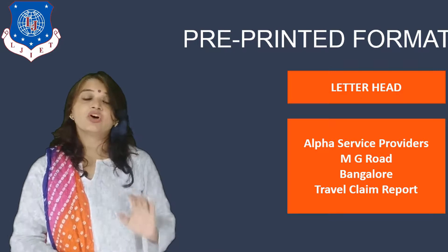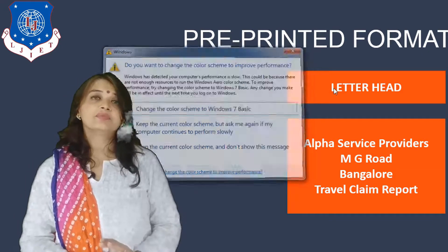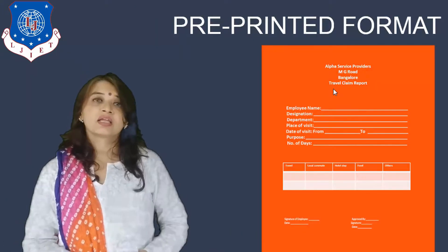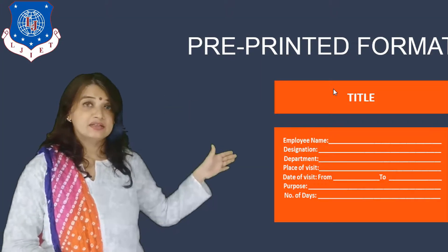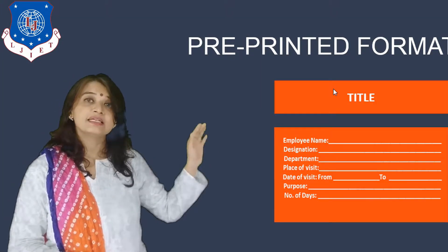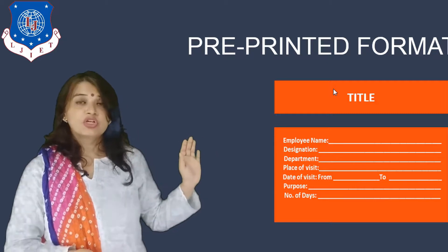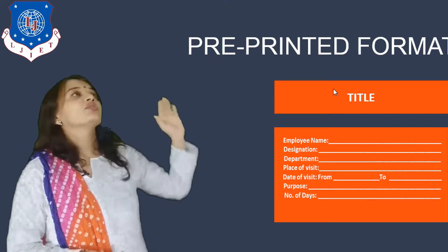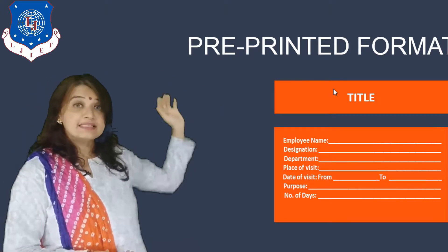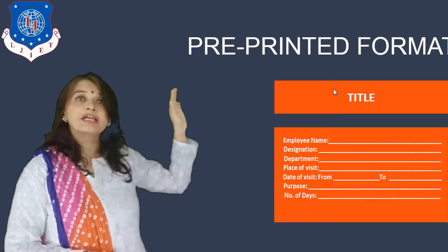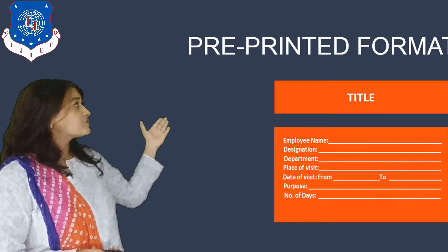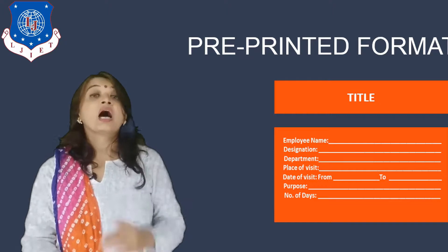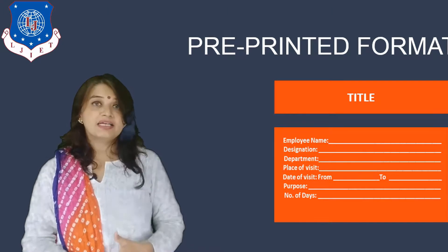The letterhead is usually centrally justified or justified to the left margin. Here the heading of the report is also written, which is the travel claim report. Now the next element is the title. This title consists of all the details present in your report — the name and designation of the employee, the date of visit from and to, the place of visit, the purpose of visit, and the number of days spent. Again the title is justified centrally.